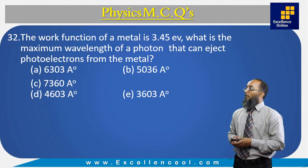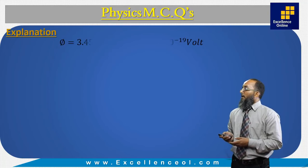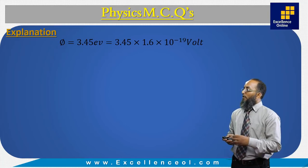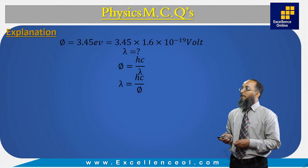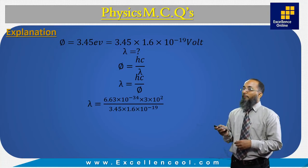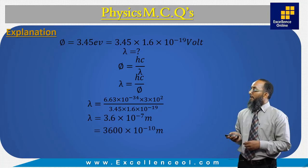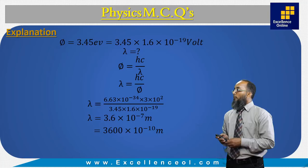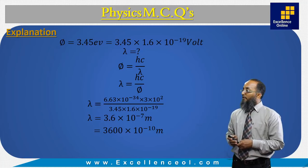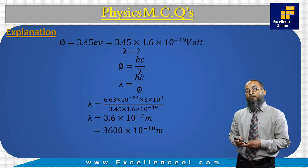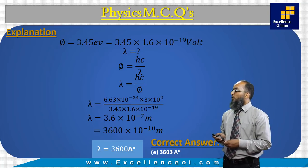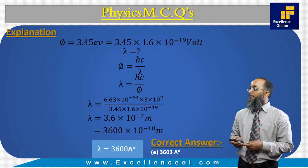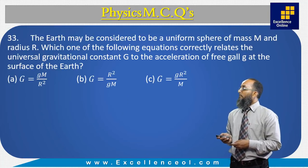The work function of a metal is 3.5 electron volts. What is the maximum wavelength of a photon that can eject photoelectrons? Convert 3.5 eV to joules by multiplying by 1.6 × 10⁻¹⁹. Using the formula for work function: φ = hc/λ, rearranging gives λ = hc/φ. Substituting the values of h, c, and φ and solving, we get 3.6 × 10⁻⁷ m = 3600 Ångströms. The correct answer is E: 3603 Ångströms.